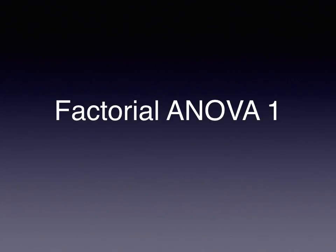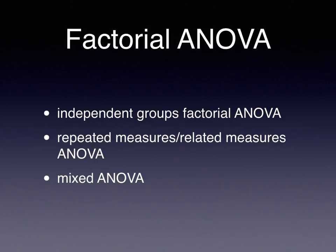Hi, Chris Goode here. This is a talk on factorial analysis of variance. We can actually consider several different types of factorial analysis of variance. The one we're going to use in an example today is an independent groups factorial ANOVA. But please understand that you can have repeated measures or related measures ANOVAs where you have the same entities exposed to combinations of two different independent variables, in which case you'd have a fully repeated measures ANOVA.